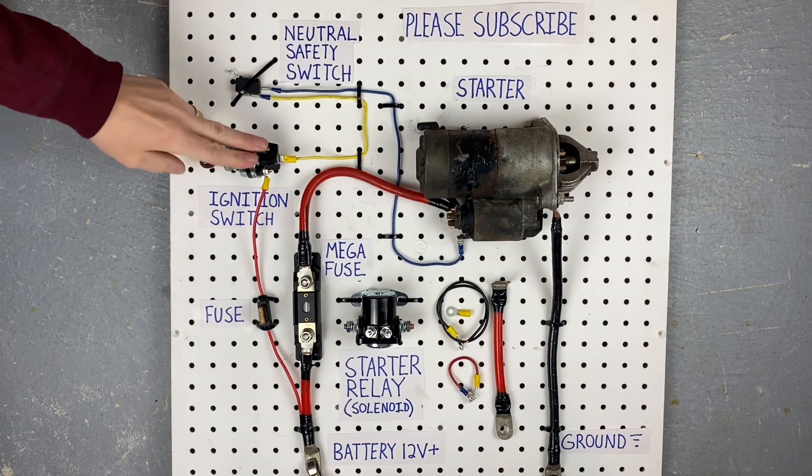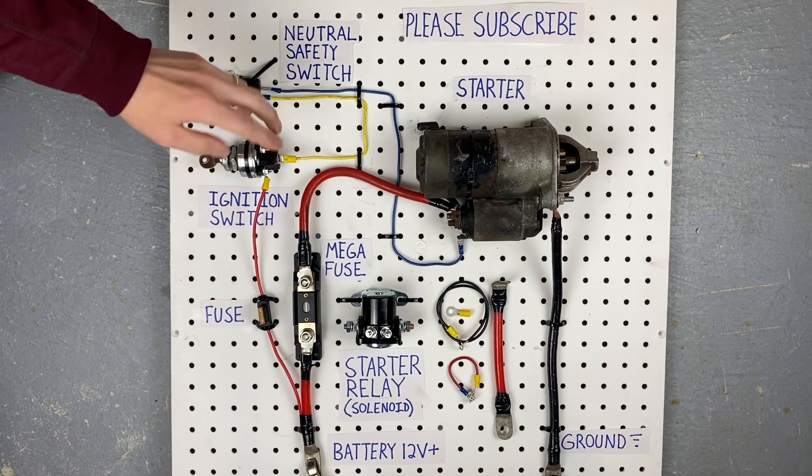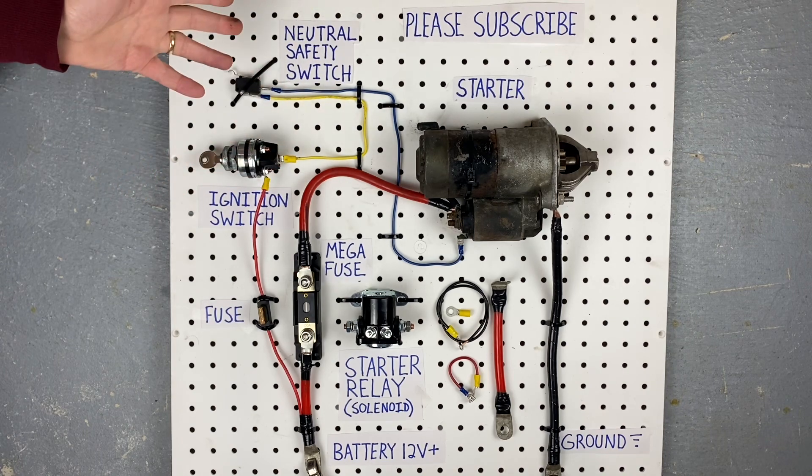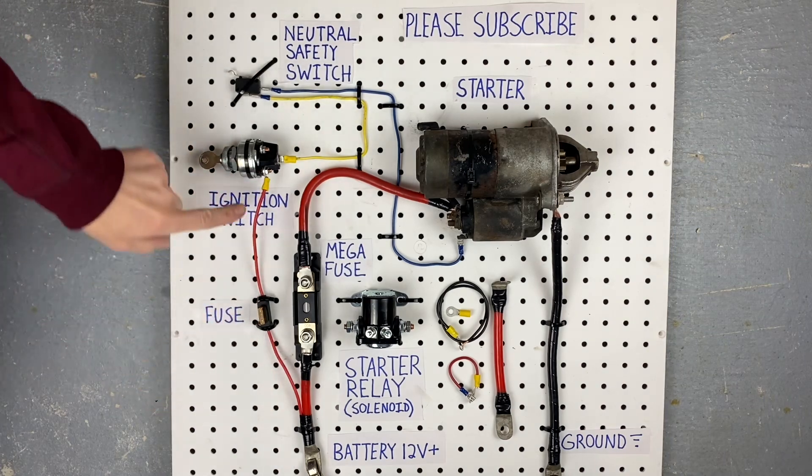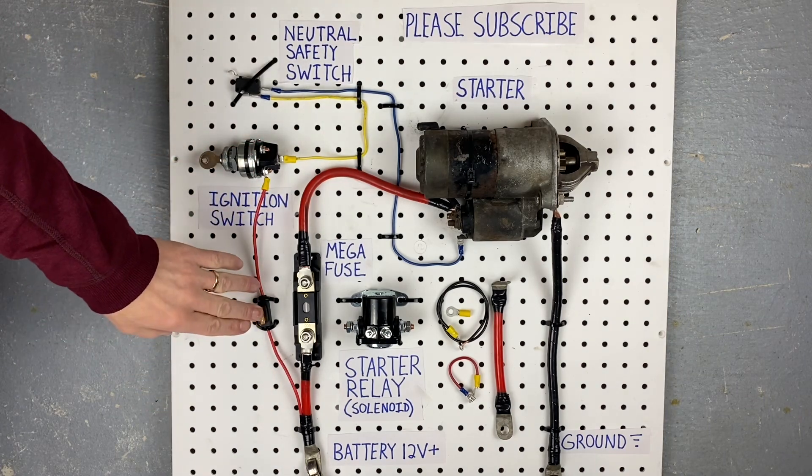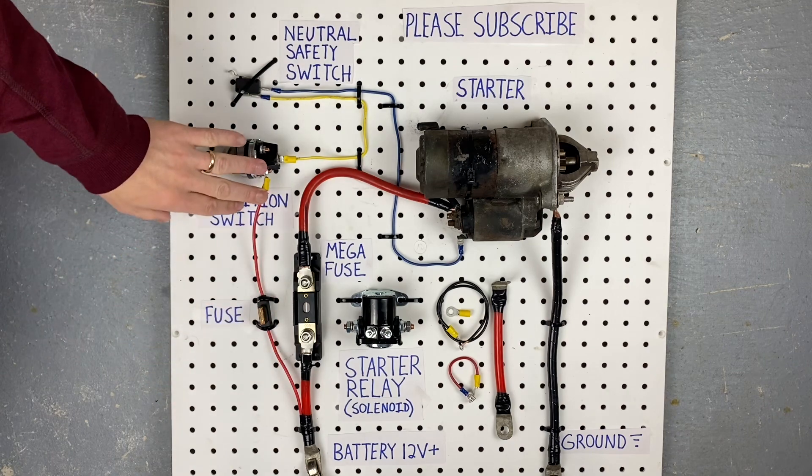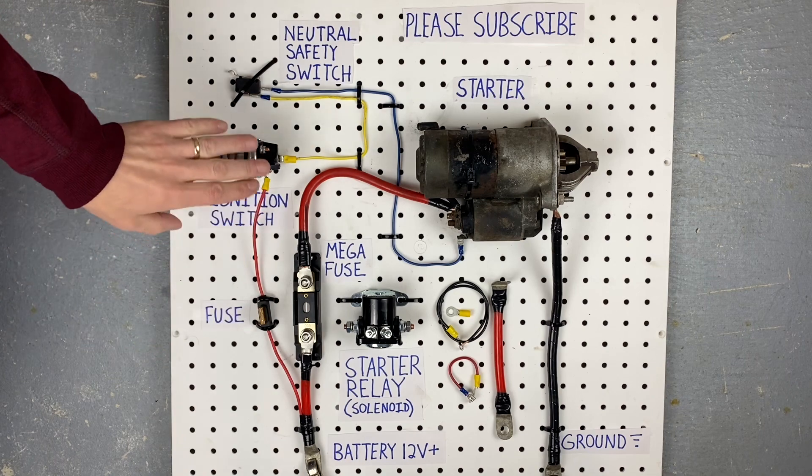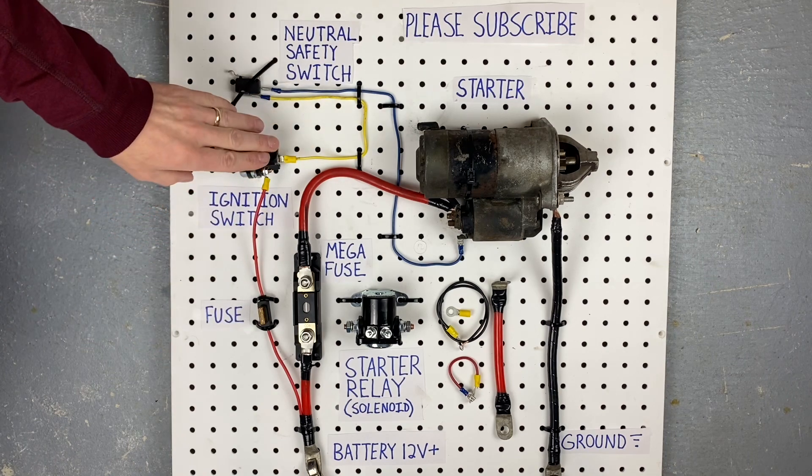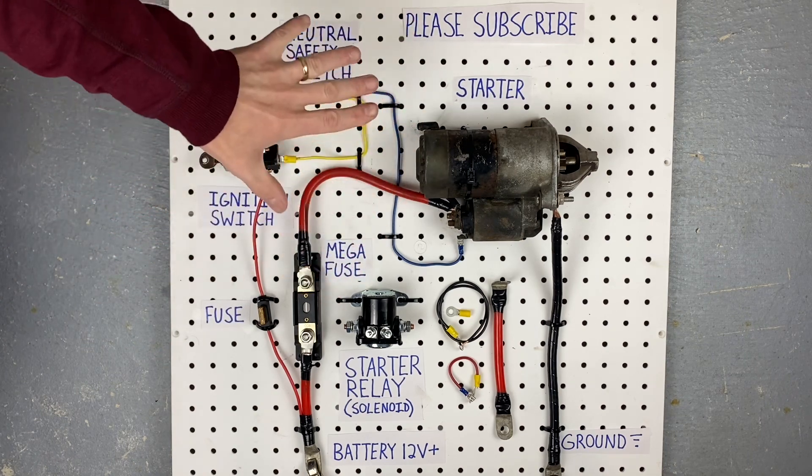This right here is obviously your ignition switch. We only have two wires going to it today. The rest are not hooked up because they're just not necessary for the starter circuit. Right here is the power wire that goes to the ignition switch. Obviously it has a fuse in it. This normally would be like a fuse box because you'll have a fuse box under your dashboard or under your hood that will power up your ignition switch. And then the power goes out your ignition switch to various other components.